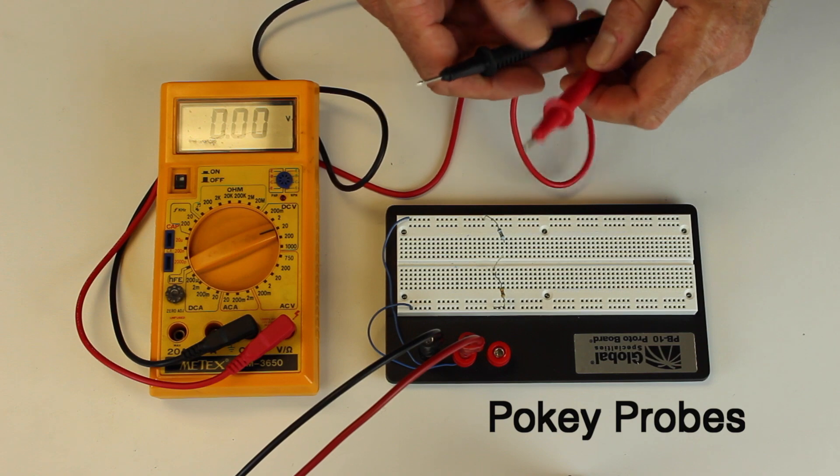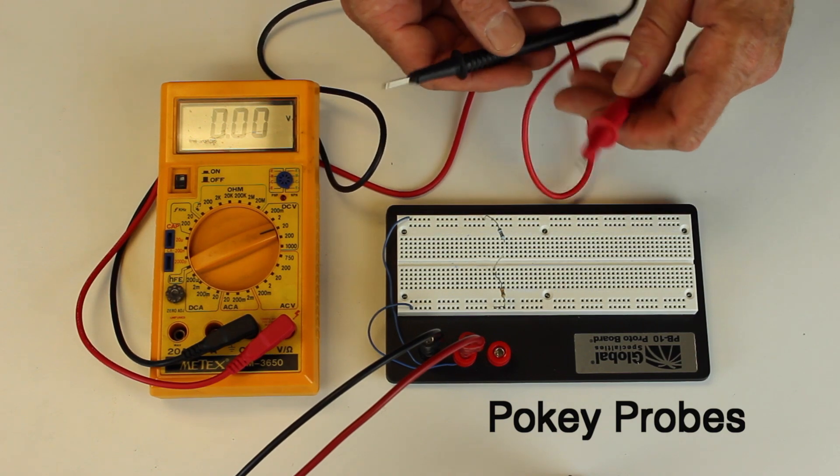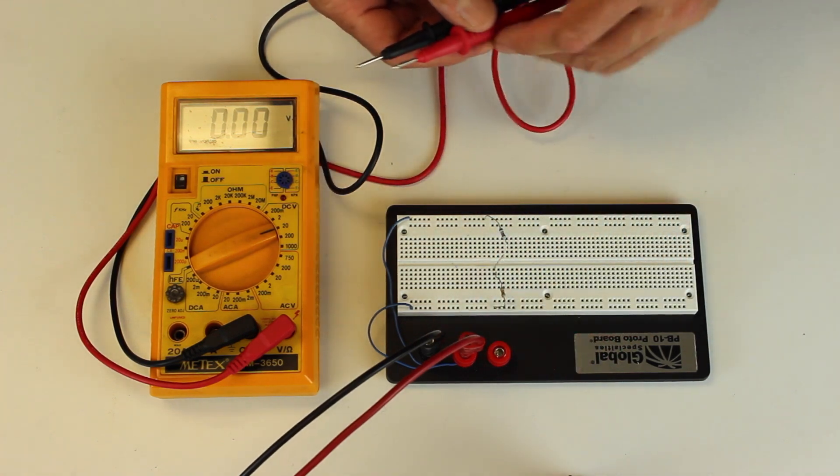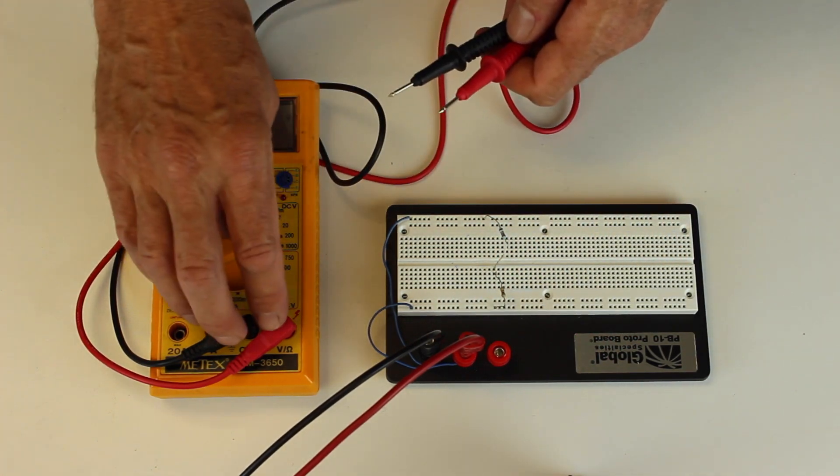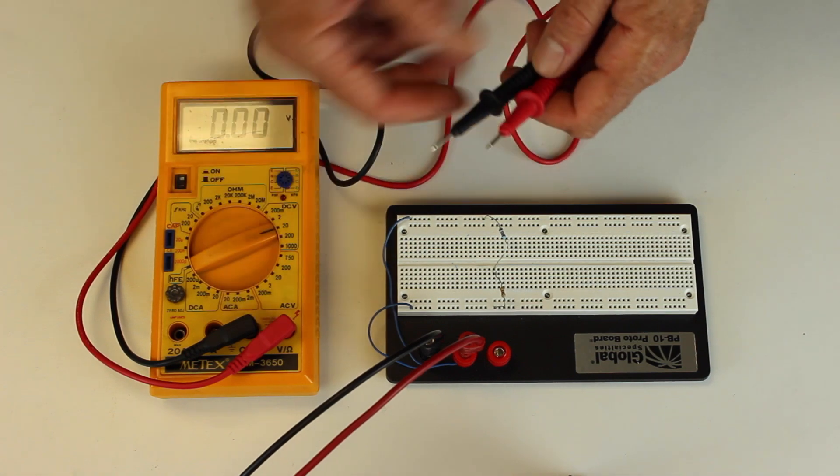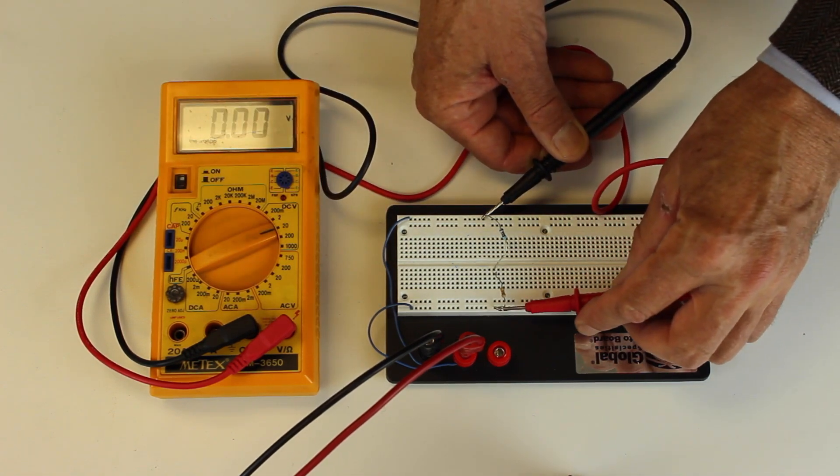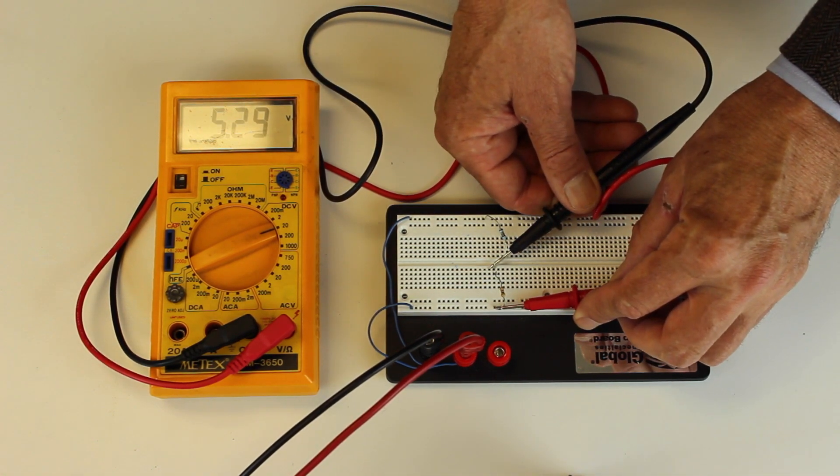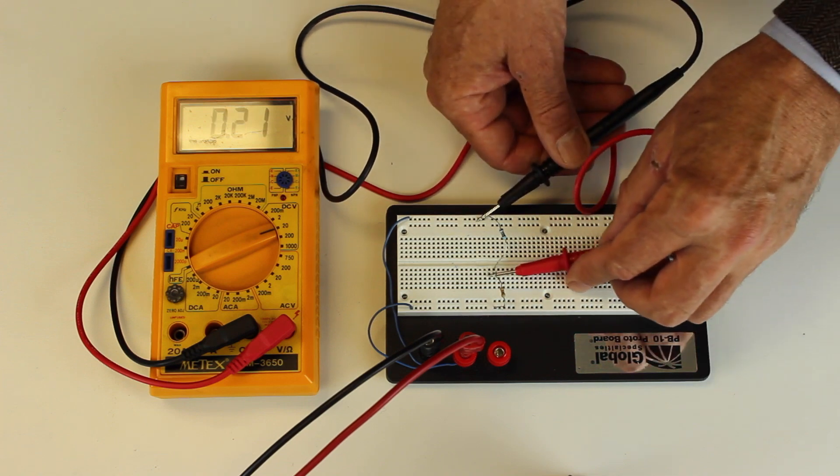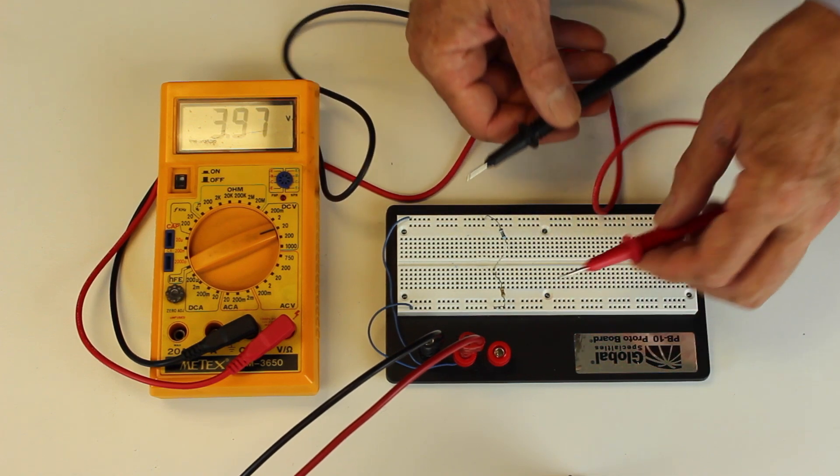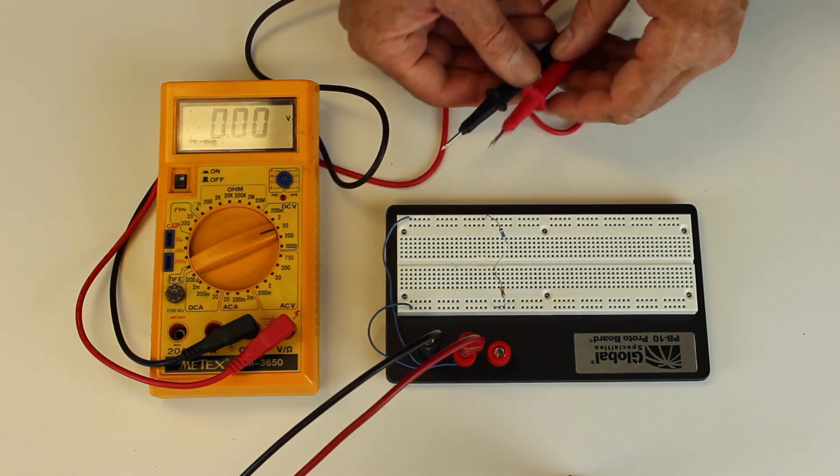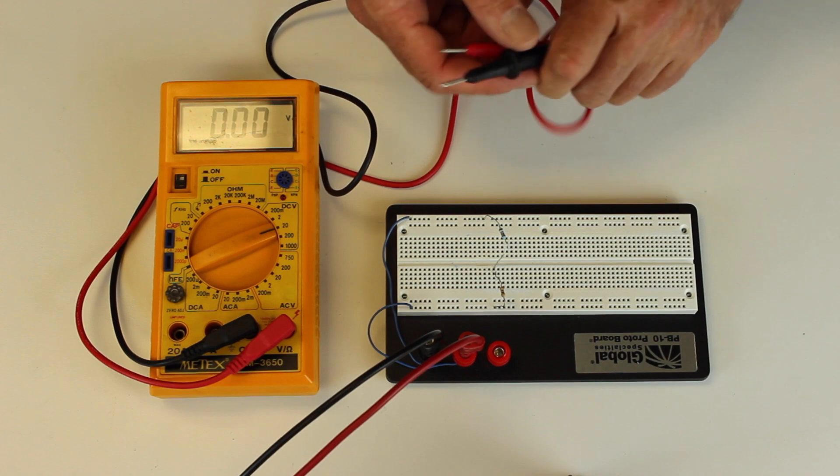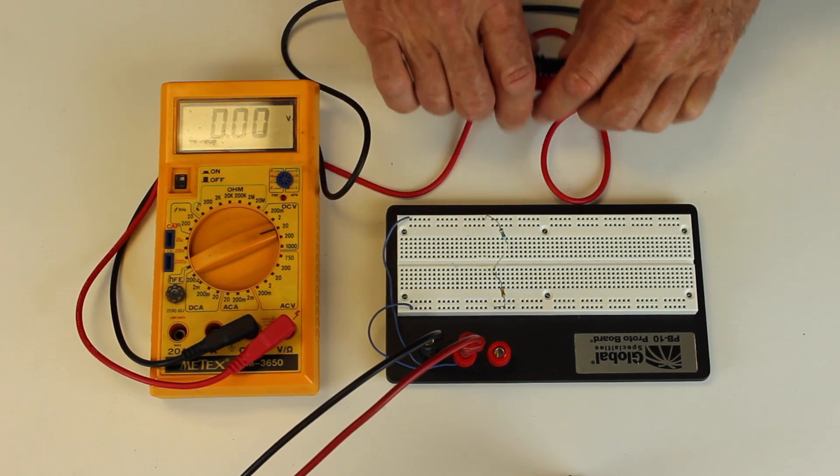So we have here the pokey probes that are very useful for going in and measuring voltages at points in a circuit. I've got basically a circuit with a couple of resistors hooked up to an external voltage source, and the pokey probes are hooked up to our DVM, 20-volt scale. And I can go in, and I can touch various places in the circuit, and see between those two points, it's 10.6 volts, between those two, it's 5.3, between those two, it's also about 5.3. So they're very convenient for going in and quickly measuring voltages between points on the circuit. They're not very useful as a permanent connection, but if you want to check something, they're really convenient.